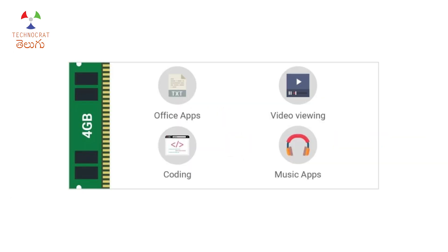For 4GB RAM capacity, office apps like Microsoft Word, Excel, PowerPoint, and Access run smoothly. It also handles MP4 video playback, YouTube videos, music apps, coding courses, and general smartphone-level tasks. That is not a problem for 4GB usage.